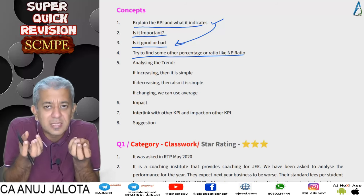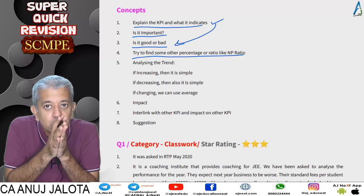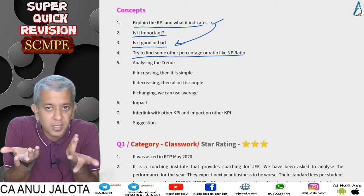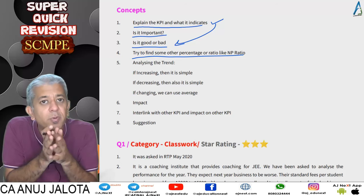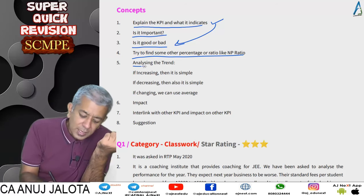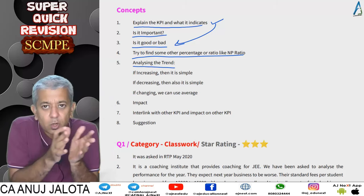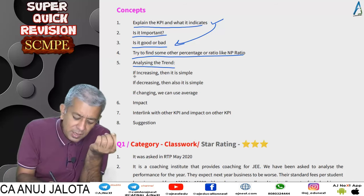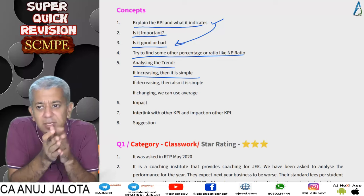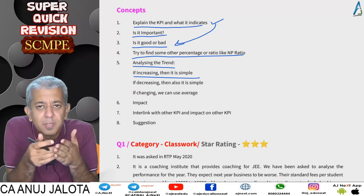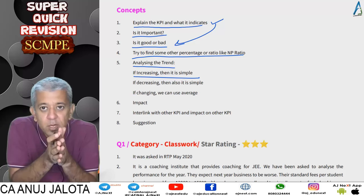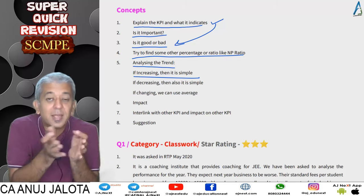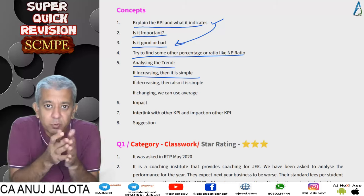If absolute numbers are given, try to find out percentages. For example, if a company is very risky, try to find out the debt-equity ratio. If data is given for five or six years, analyze the trend. If net profit ratio is increasing — say nine, ten, twelve, fifteen percent — you can say the company is doing well. If it's decreasing — fifteen, twelve, ten, nine percent — you can say the company is consistently deteriorating.